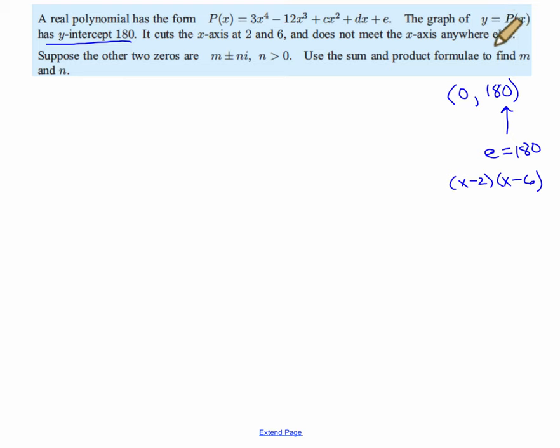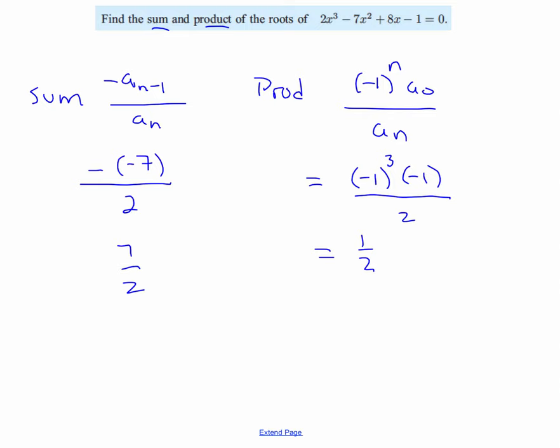And does not meet the x-axis anywhere else, so I'm going to have some complex solutions. Suppose the other two zeros are m plus or minus n i, where n is greater than 0. Use the sum and product formula to find m and n. All right, so the sum of the roots, the roots are 2 plus 6 plus m plus n i plus m minus n i.